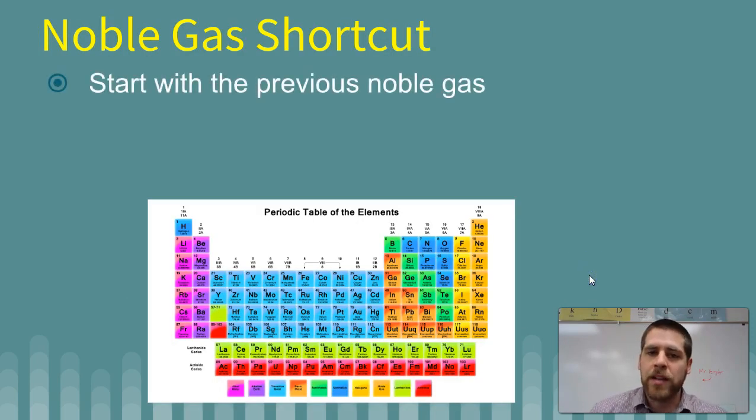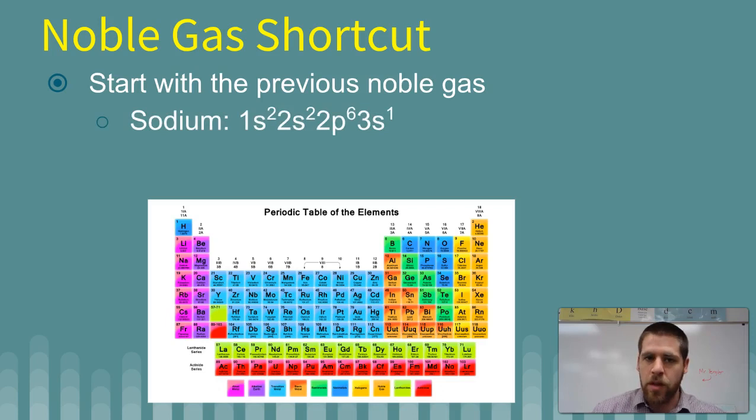All right, then there's also a noble gas shortcut. So what I just showed you is kind of the longhand, where you go through the entire periodic table until you get to your element. But with the noble gas shortcut, you start with the previous noble gas, and you put that in brackets. So sodium, this would be the longhand for sodium, which is right here. It ends in 3s1. And that's basically what we're saying with the noble gas shortcut. We're just saying what it ends with, because everything prior to that, everything above that, is going to be the same.